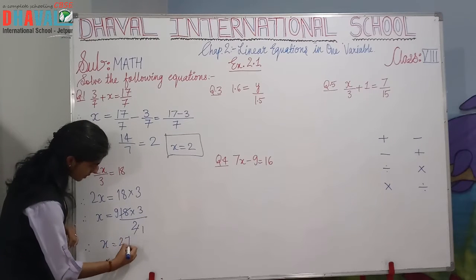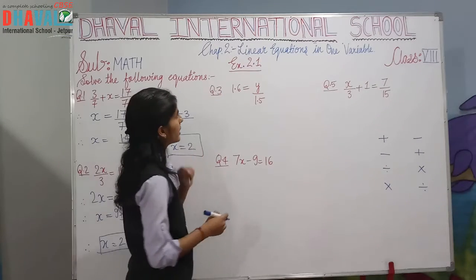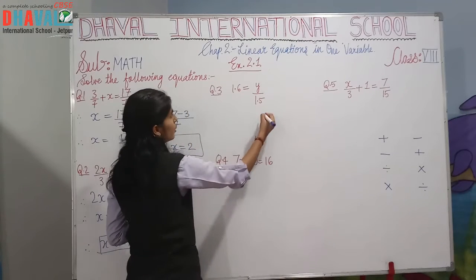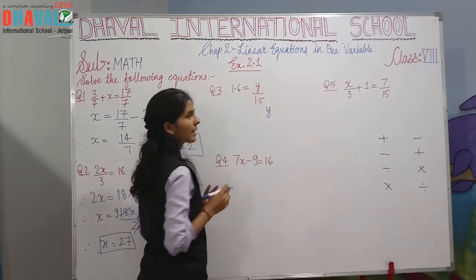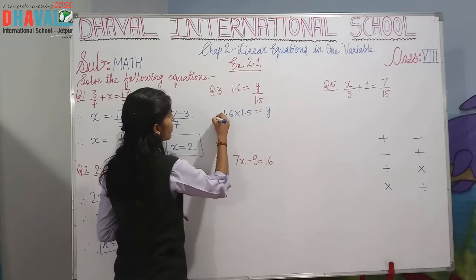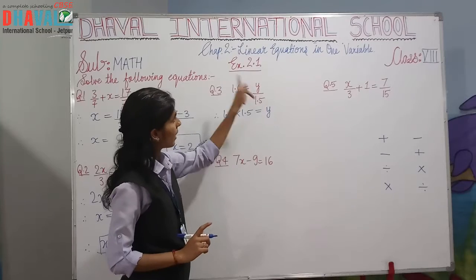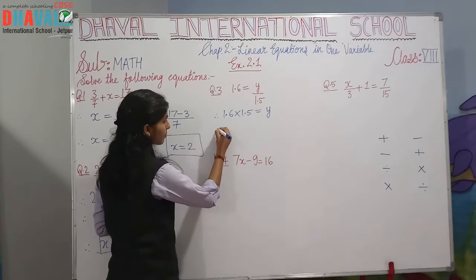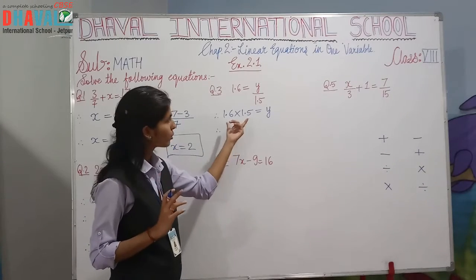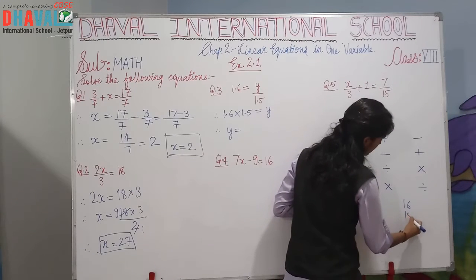Question number 3: 1.6 = y/1.5. Here y is on the right side, so to isolate y we multiply both sides by 1.5. So y = 1.6 × 1.5 = 2.4. We multiply because 1.5 is in the denominator, so it gets multiplied to the other side.